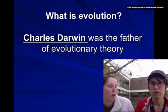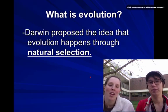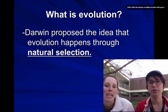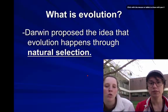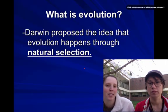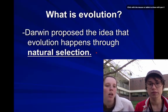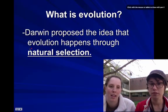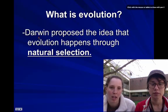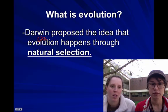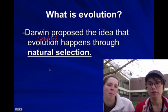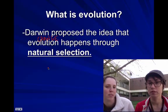So let's go ahead and start talking about what he found out. Darwin proposed the idea that evolution happens through something called natural selection. Let me break this down. Evolution means living things changing over time, and Darwin proposed that this change happens through something called natural selection.